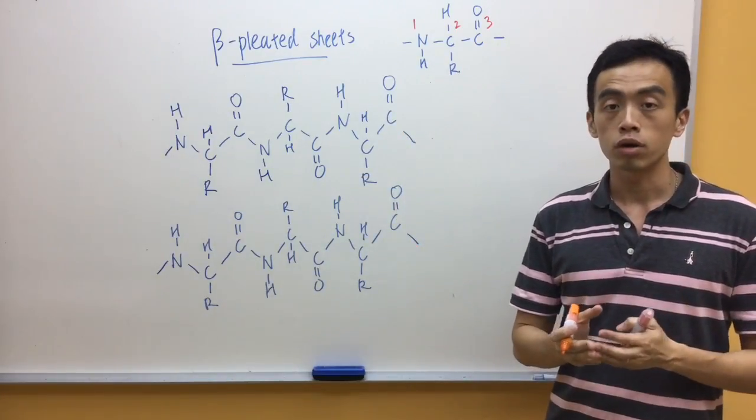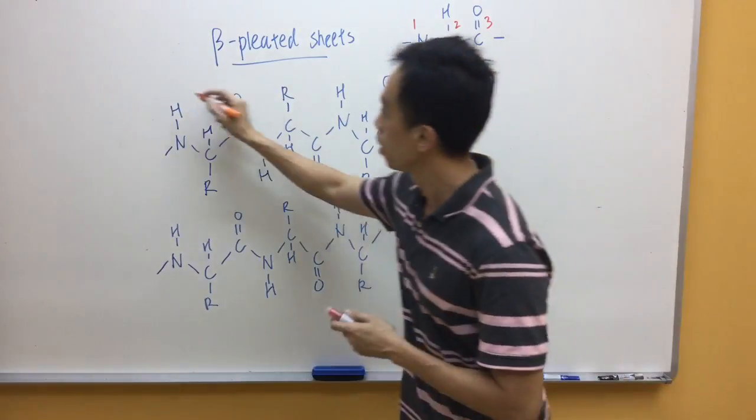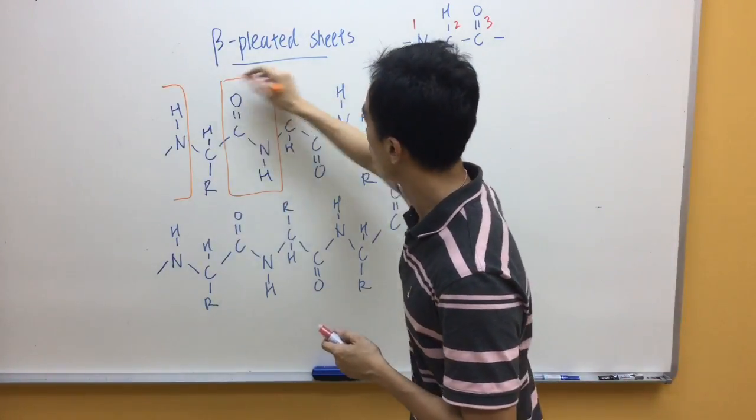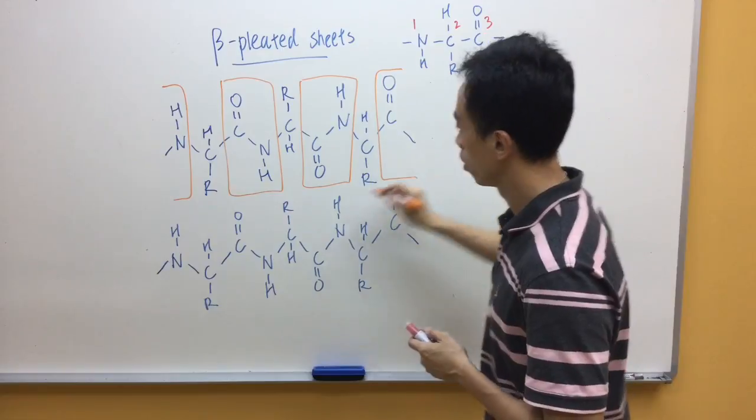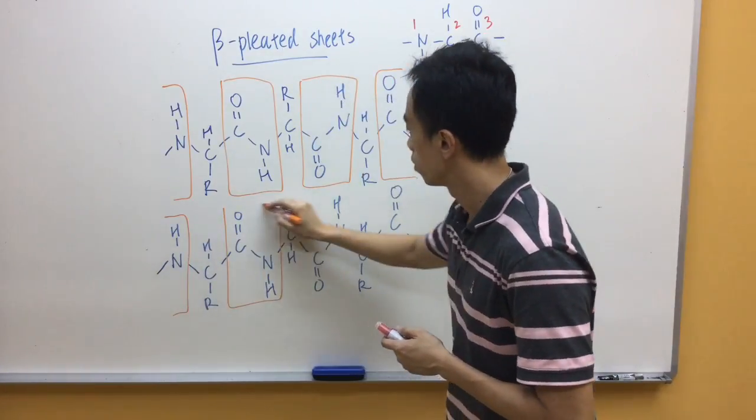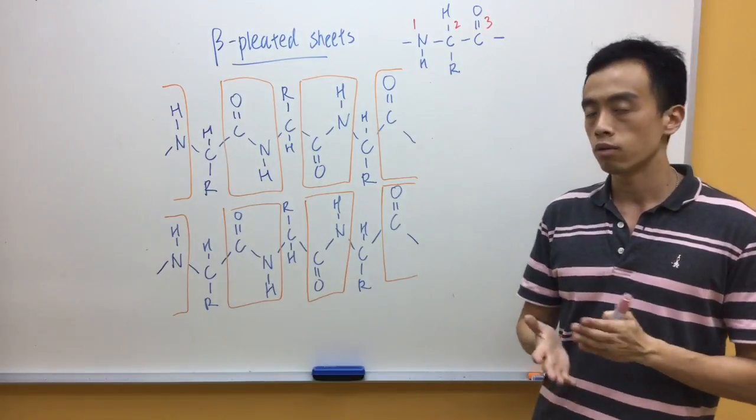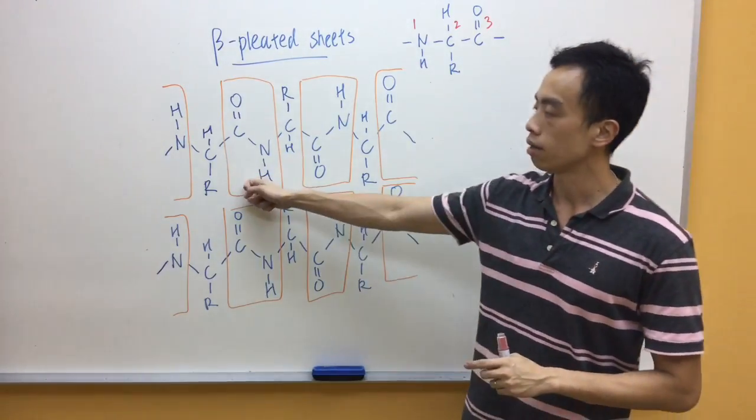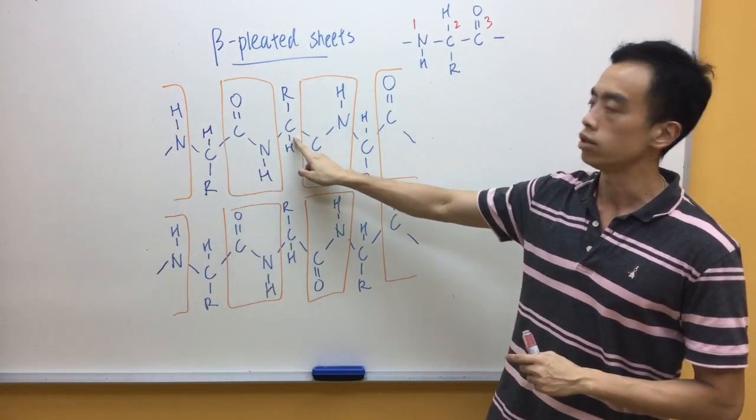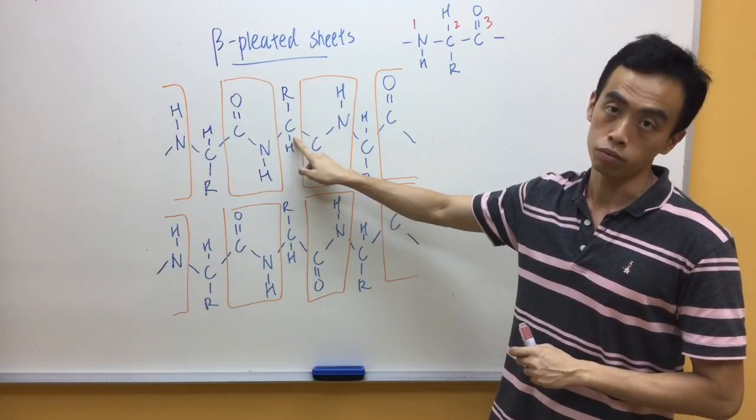My suggestion is you use a pencil to box out the peptide bond. Now, if you have drawn this correctly, what you notice is between one peptide bond and another peptide bond will just be your carbon with an R group.